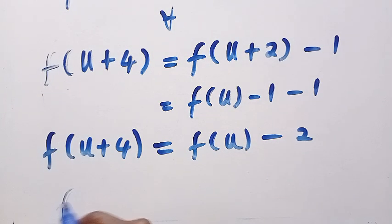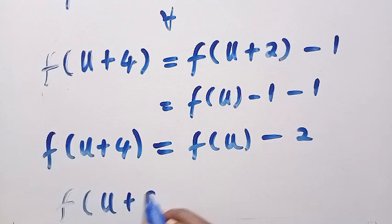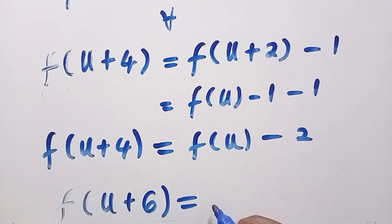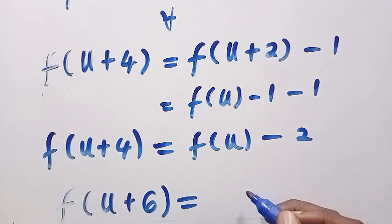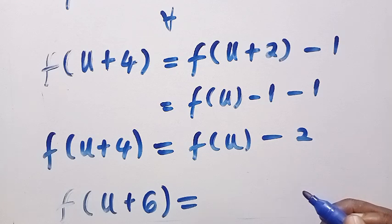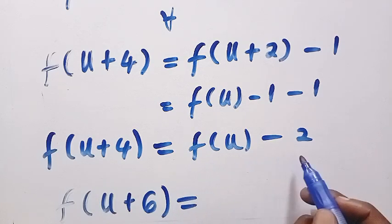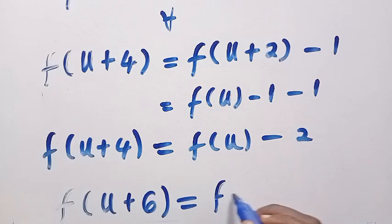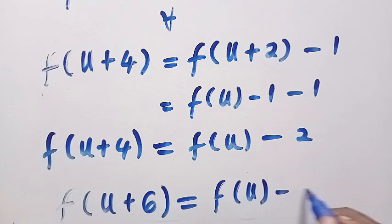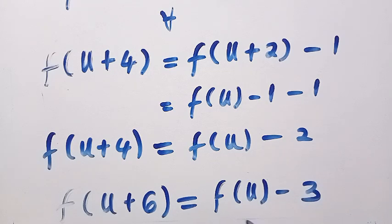But we cannot conclude yet, so let's test for another one. Suppose I also increase this one by 2, we are going to have f(u+6). This will be equals f(u+4) minus 1, but f(u+4) is also given as f(u) minus 2. Therefore we draw a conclusion here as f(u) minus 3. We are going to see some pattern here showing that f decreases and the argument always increases by 2.